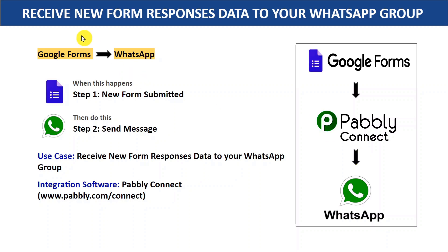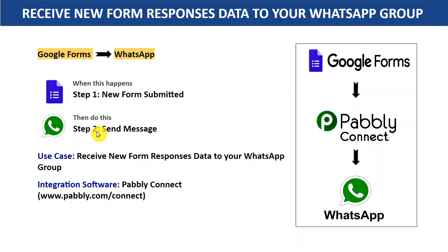In this video we are going to learn how you can automatically receive new Google Form responses data to your WhatsApp group. Google Forms and WhatsApp are two different applications with no direct connection, so we are going to integrate both with the help of an integration software called Pably Connect. Whenever a new form is submitted, Pably Connect will automatically send a message to a WhatsApp group — and this process requires no coding knowledge, so any non-technical person can do this easily.